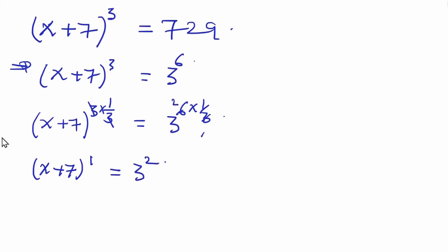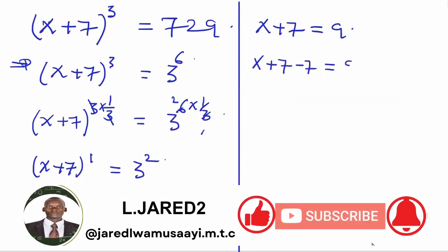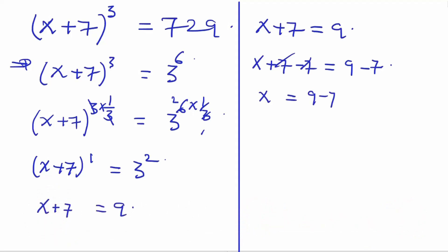This gives us the 3 raised power 2. Then, on the right hand side, the 3 power 2 is the same as having the 9. As we are simplifying this, it implies that our (x + 7) equals to the 9. As we collect the terms, we want our (x + 7) minus 7 equals to the 9 take away 7. This and this cancel out, remaining with x being equal to the 9 minus 7, giving us the final value of x as 2, implying that the value of x equals to 2.